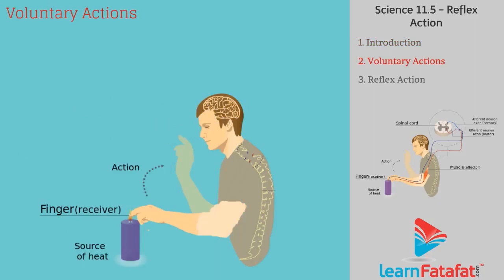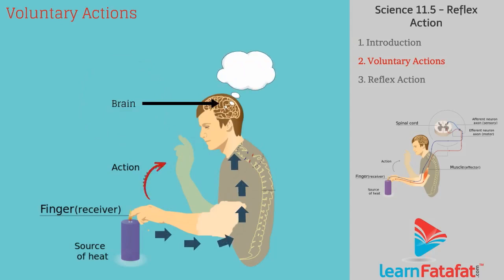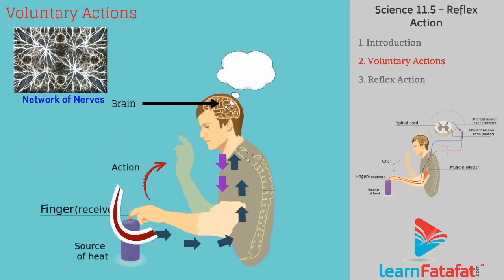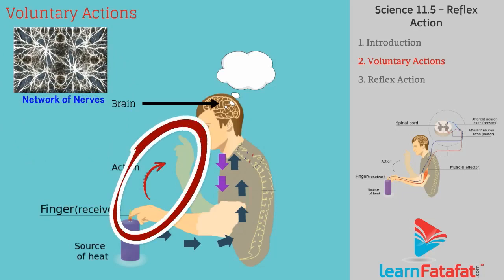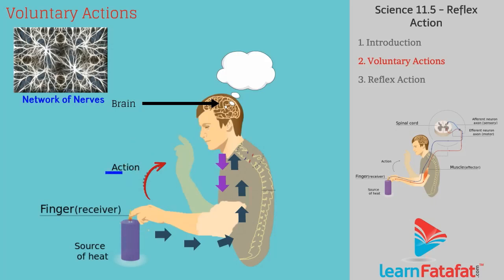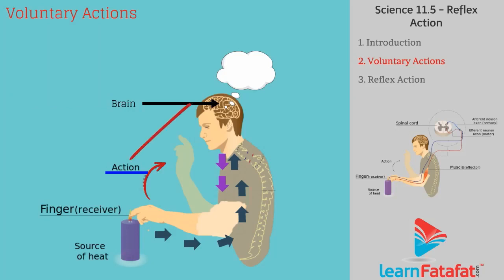Voluntary actions. Normally, a sensation creates electrical impulses which transfer information to the brain. The brain takes time to think about the situation and in response sends electrical impulses. These electrical impulses reach via a network of nerves to muscle tissue, resulting in muscular movement, such as taking the hand back. Such movements which involve thinking by the brain are called voluntary actions.